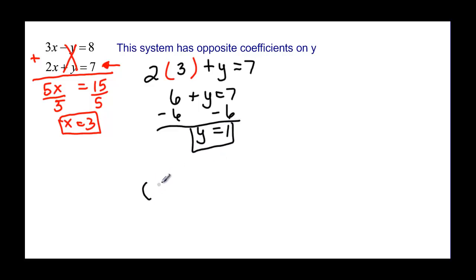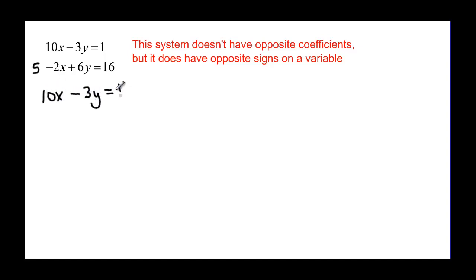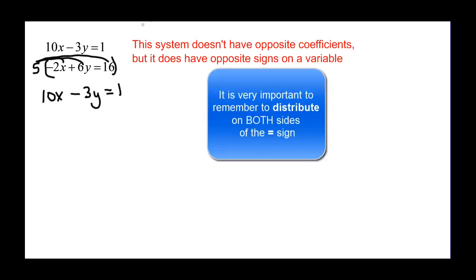This system doesn't have opposite coefficients, but it does have opposite signs on both x and y. If I choose to get rid of x, I need to get these two terms to be the same. I need to multiply one of my equations. 2 is the smaller number, so I would have to multiply this equation by 5 to get rid of the x's. My original first equation stays, and then I distribute 5 all the way through, even across the equal sign, which gives me negative 10x, plus 30y, equals 80.